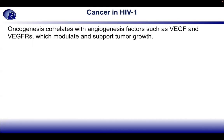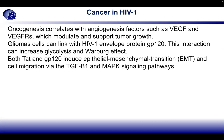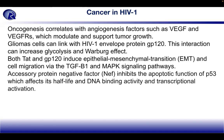Oncogenesis correlates with angiogenesis factors like VEGF and VEGF receptors, which modulate and support tumor growth. Tumor cells can link with HIV-1 envelope protein gp120, and this interaction increases glycolysis and the Warburg effect. Both Tat and gp120 induce epithelial-mesenchymal transition (EMT) and cell migration via the TGF-beta1 and MAPK signaling pathways. The accessory protein Nef inhibits apoptotic function of p53, affecting its half-life, DNA binding activity, and transcriptional activation.